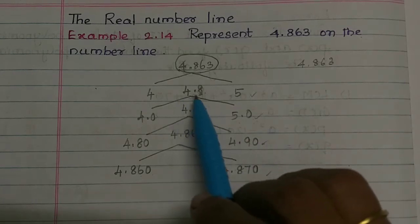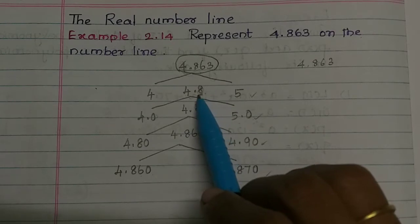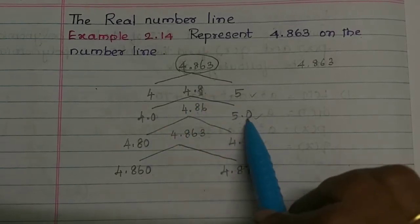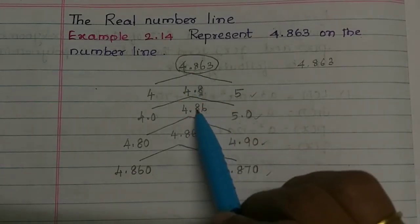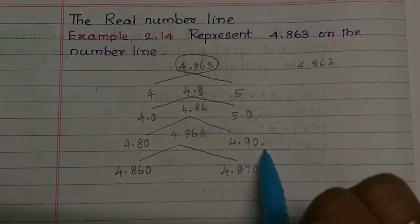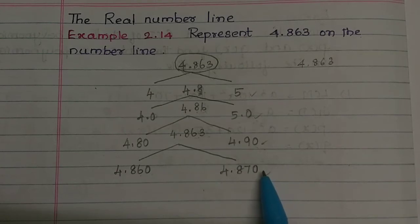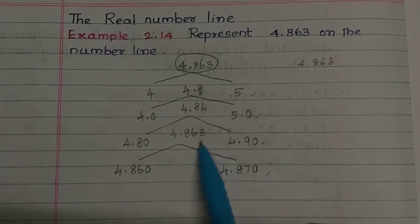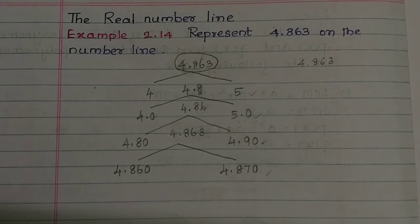What number is 4.8? It lies between 4 and 5. Then we get 4.86. So 4.86 is between 4.80 and 4.90. Then we mark 4.80 and 4.90. Then for 4.863, the last digit 3 means it falls between 4.860 and 4.870. So 4.863 is between 4.860 and 4.870.